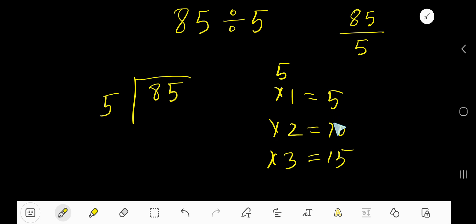5 goes into 8 how many times? Once. 5 times 1 is 5. If you subtract, you're getting 3. Bring down this 5. 35.